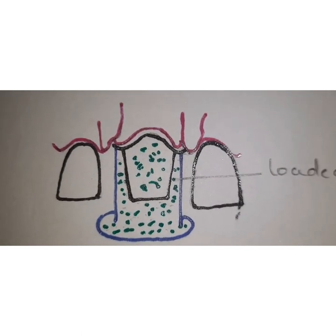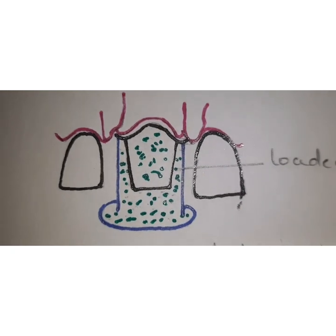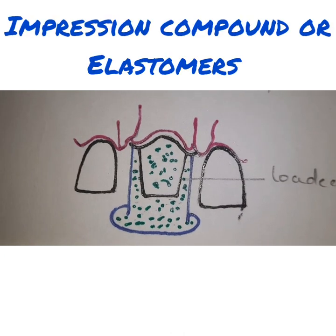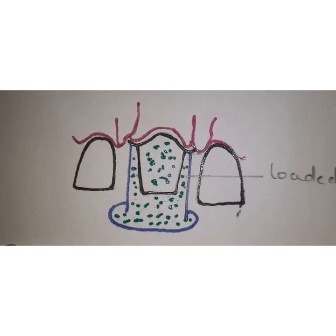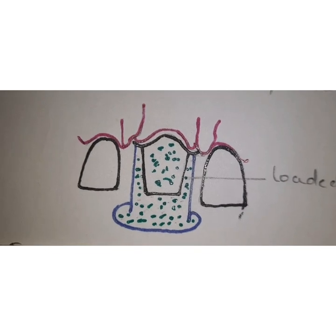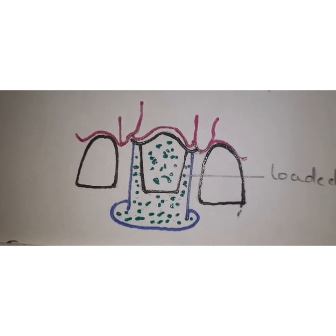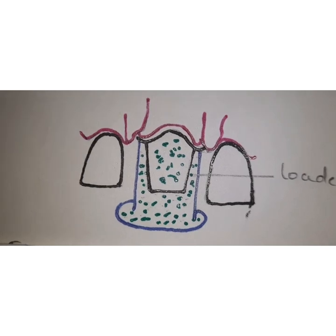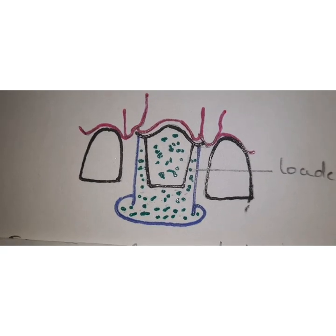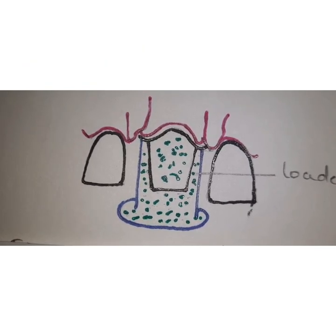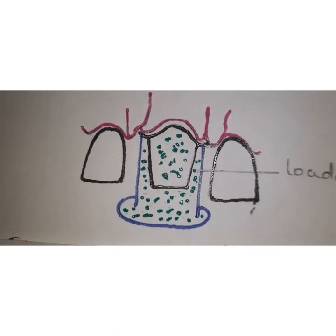Once the contouring of the copper tube is done, it is loaded with an impression material like modeling compound or elastomeric impression material and pressed into its final position, mechanically displacing the gingival to record the details. Once the material is set, it is removed and poured with die stone or electroplated material. This technique is used when multiple abutments are prepared and individual impressions are desired for more accuracy.